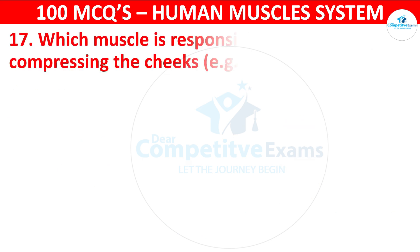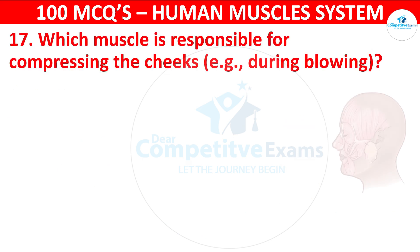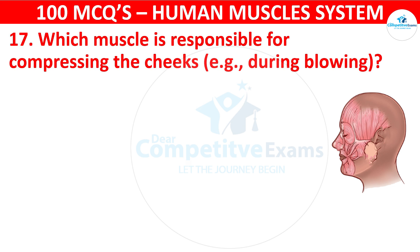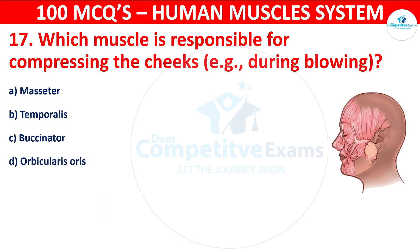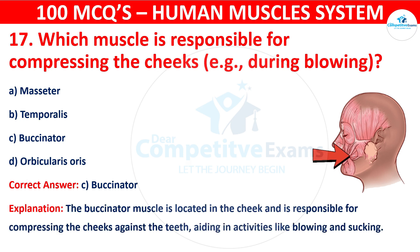Question number seventeen: Which muscle is responsible for compressing the cheeks, for example during blowing? Your options are: Masseter, Temporalis, Buccinator, or Orbicularis oris. The correct answer is C, that is buccinator. The buccinator muscle is located in the cheek and is responsible for compressing the cheeks against the teeth, aiding in activities like blowing and sucking.